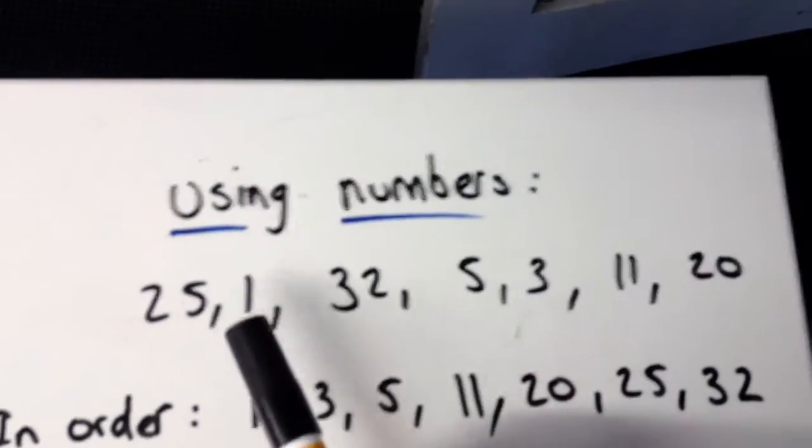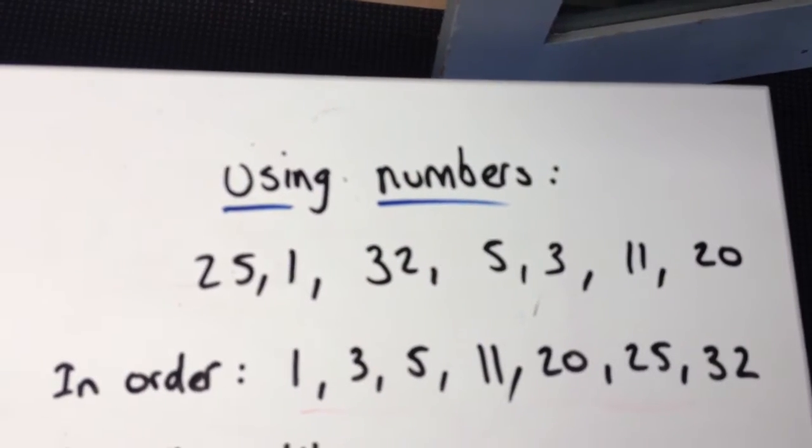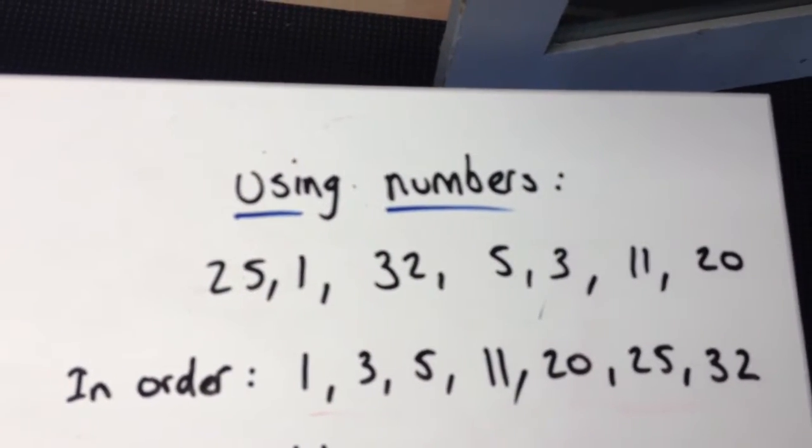Now let's use some numbers. Here's a data set: 25, 1, 32, 5, 3, 11, and 20. I want to find the median. So the first thing I do is put them in order: 1, 3, 5, 11, 20, 25, and 32.